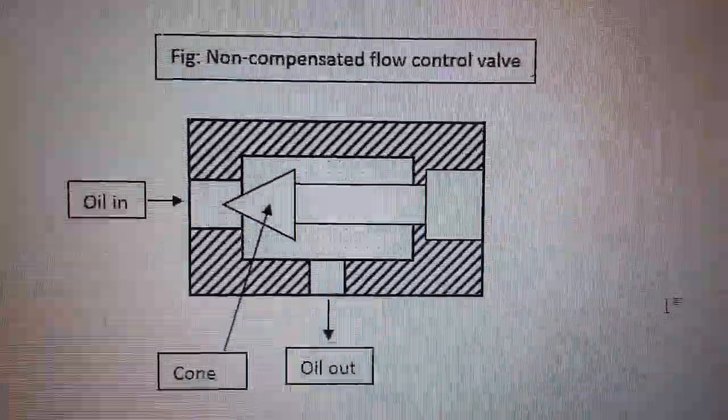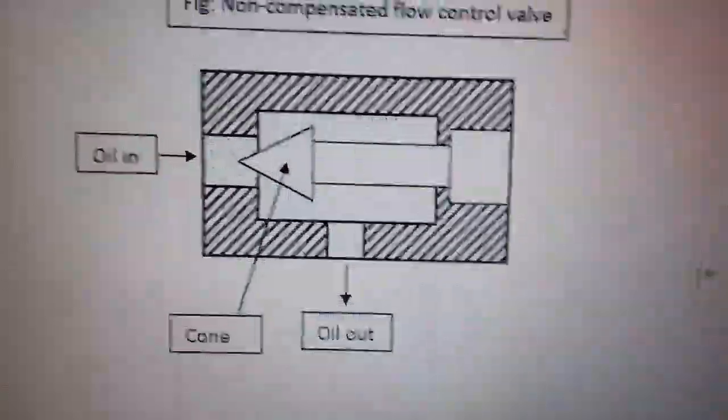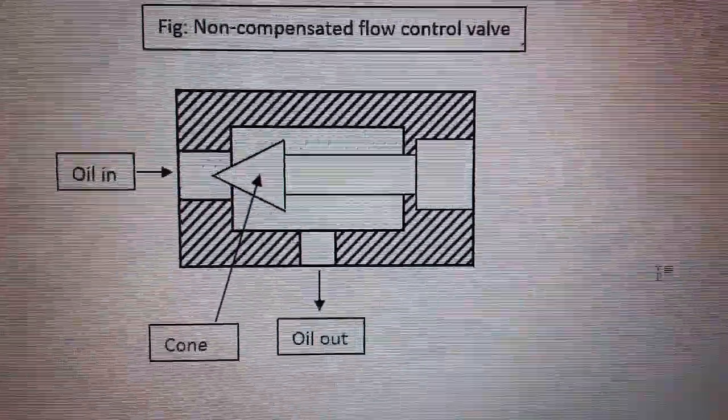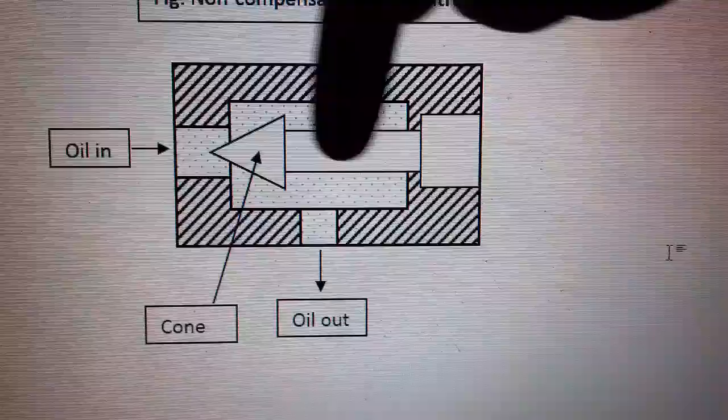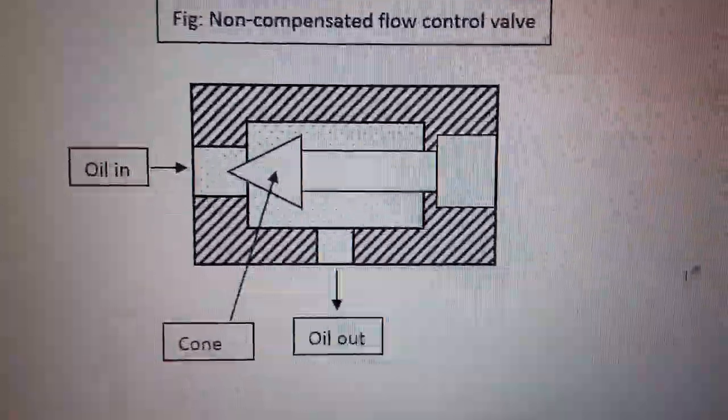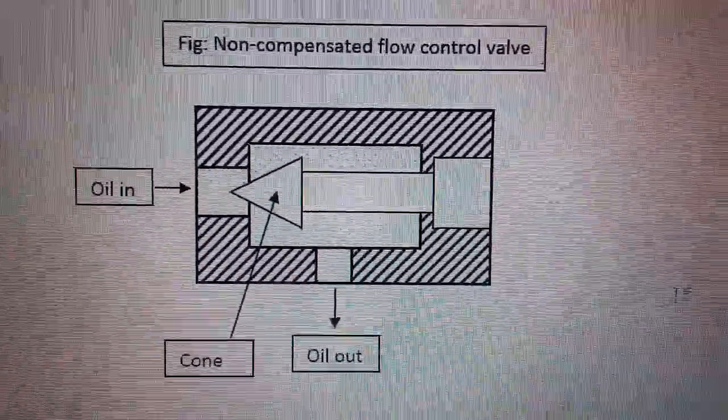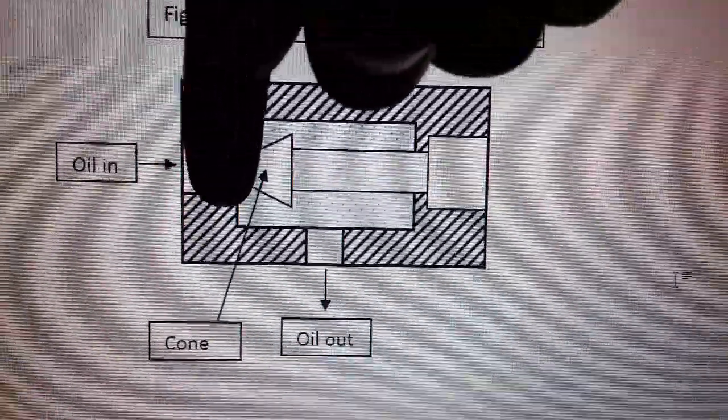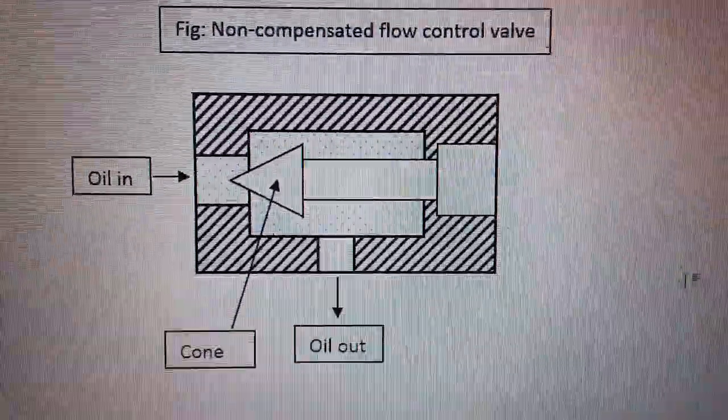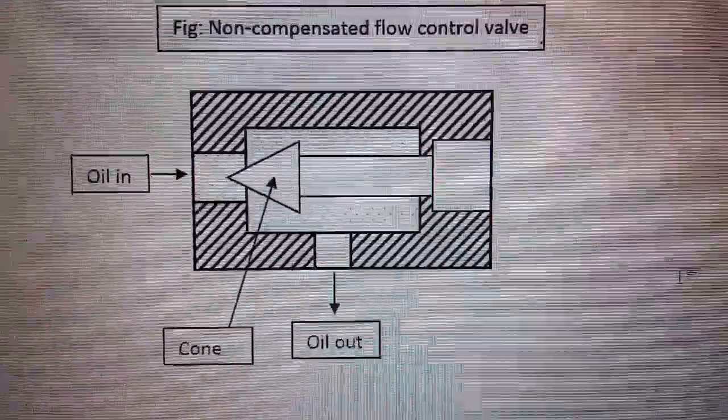The flow can be restricted by adjusting this cone. The cone can be moved forward or backward using a screw over here. When the pressure of the incoming oil changes, the flow of the outgoing oil will also change. There is no compensation provided for the pressure.